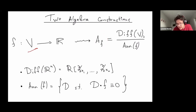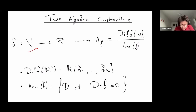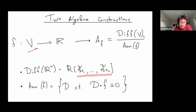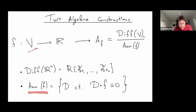This algebra is given as a quotient of the ring of differential operators on V by the ideal of those differential operators which annihilate our polynomial F. If we choose a basis, our vector space will be R^n and the ring of differential operators is the polynomial ring in partial derivatives with respect to our standard coordinates. Any differential operator is just a polynomial in these partial derivatives, and the annihilator of F consists of those operators which completely annihilate it — after you apply the operator, you get the identically zero function.